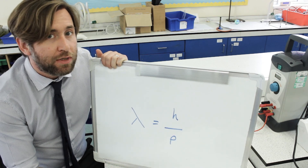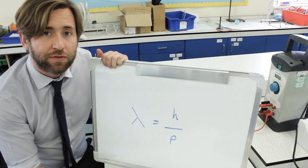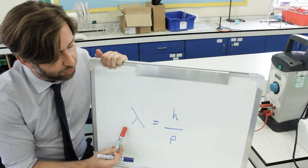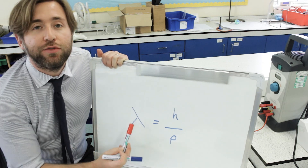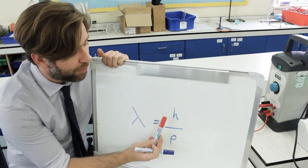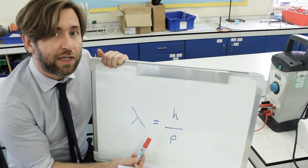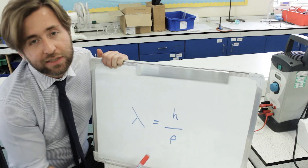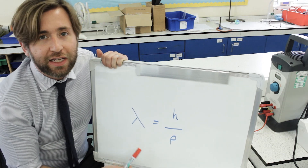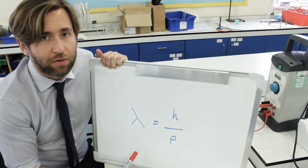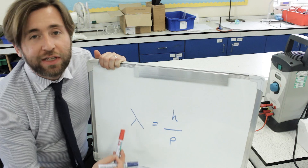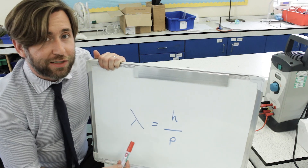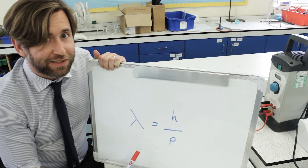Now remember, they may only tell you the velocity of the electron, and you can still work out its de Broglie wavelength because you've got Planck's constant in your data sheet and you've got the mass of an electron in your data sheet as well — that's to say the mass of an electron is fixed below relativistic speeds.